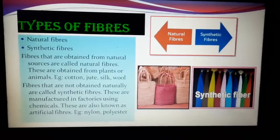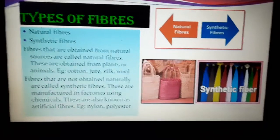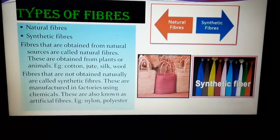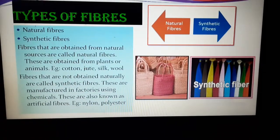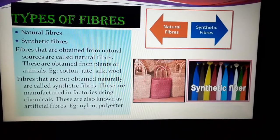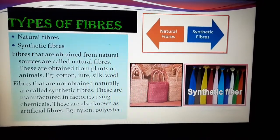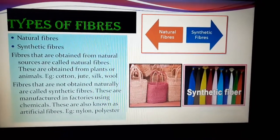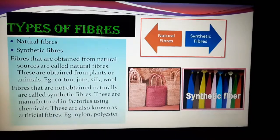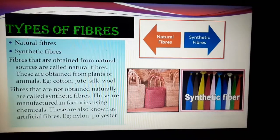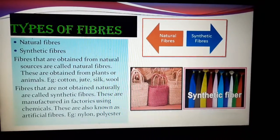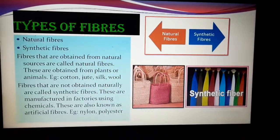Fibers that are obtained from natural sources are called natural fibers. These are generally obtained from plants or animals. For example, cotton, jute, silk, and wool are all examples of natural fibers.